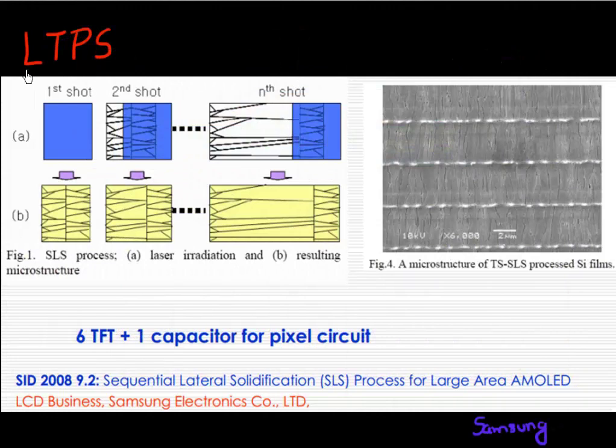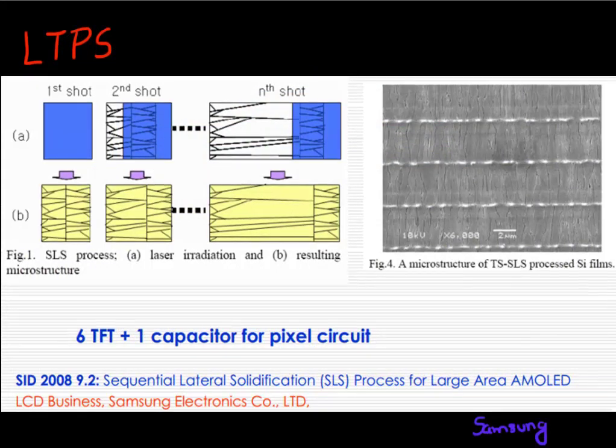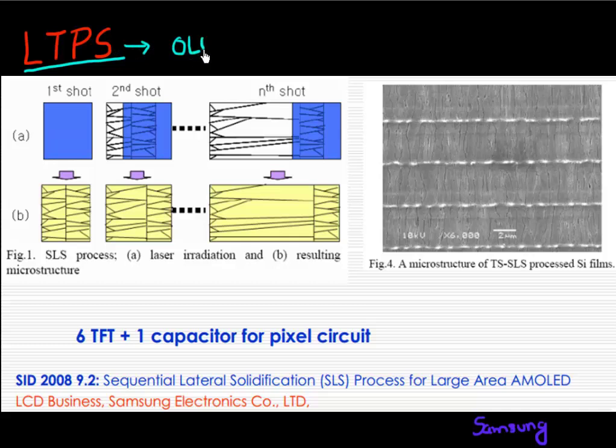So finally, a thing I want to mention is how this low temperature polysilicon material is made. So this is the only material as we saw, which is suitable enough to enable this OLED-based display. And the reason why it's called low temperature is because this silicon, which is used to make this polysilicon material, it's deposited at a low temperature.